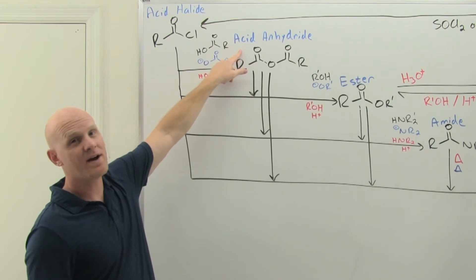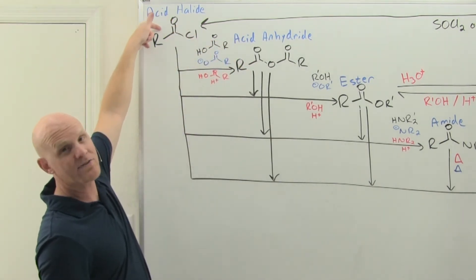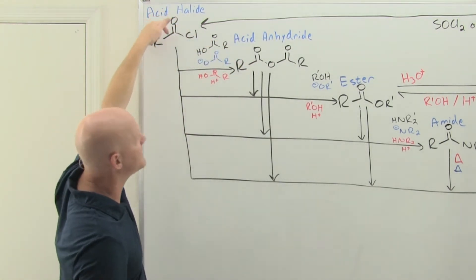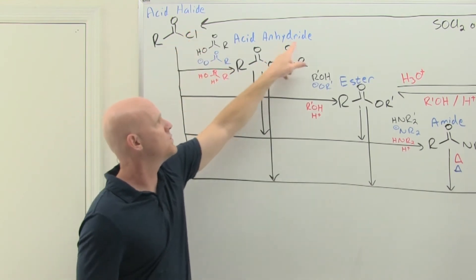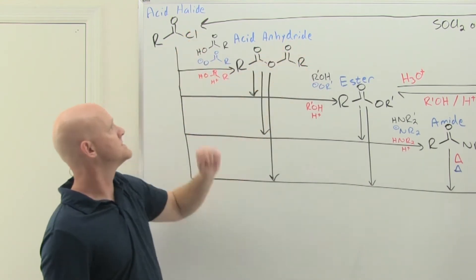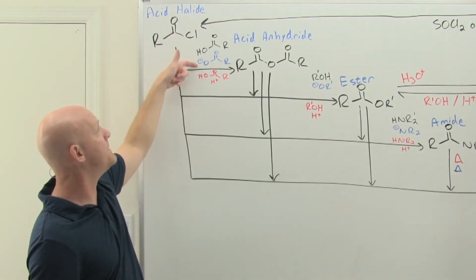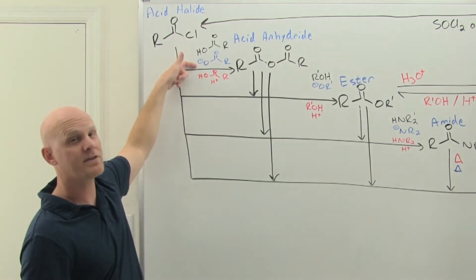The only real way we have to make an acid anhydride is to start with the even more reactive acid halide. With your acid halide, you just need to add the appropriate carboxylic acid to replace your halide with that carboxyl group. You can do that uncatalyzed with the carboxylic acid or base catalyzed with the appropriate carboxylate.